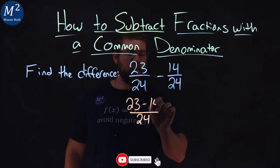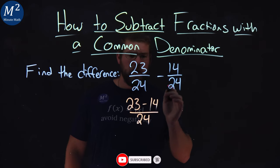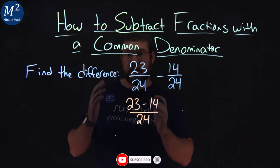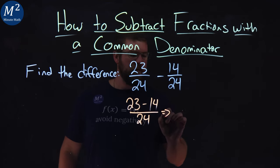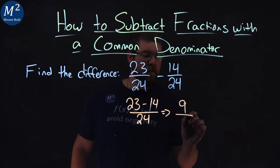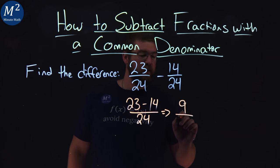23 minus 14. Well, 23 minus 14, that's just 9. So we have a 9 here over, 23 minus 14 is 9, over 24.